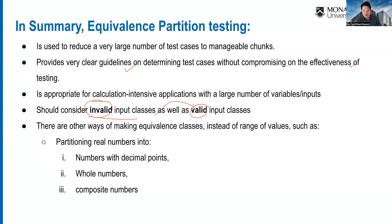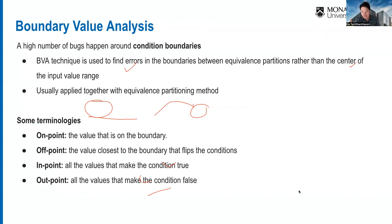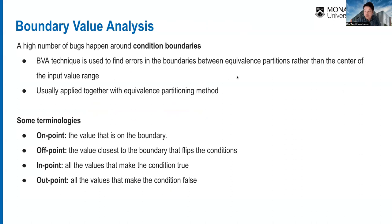There are other ways of making equivalent classes instead of ranges of values — for example, partitioning real numbers into numbers of decimal points, whole numbers, or composite numbers. In this unit we'll just focus on integer values or at most decimal point values.